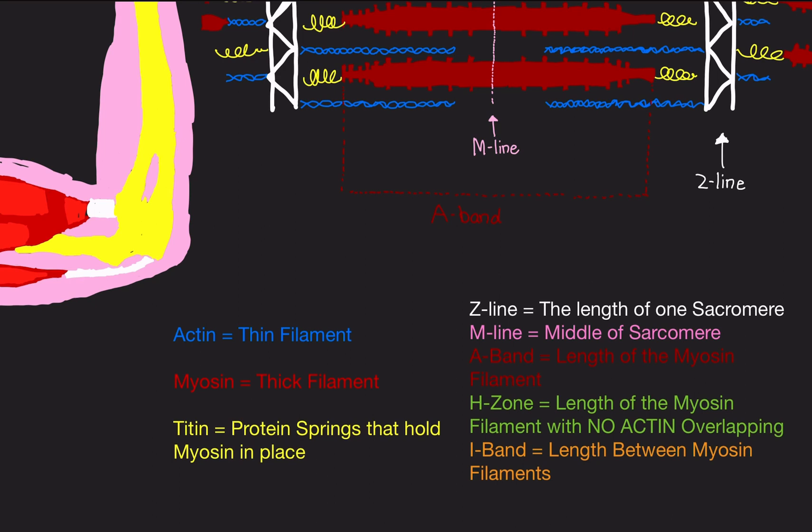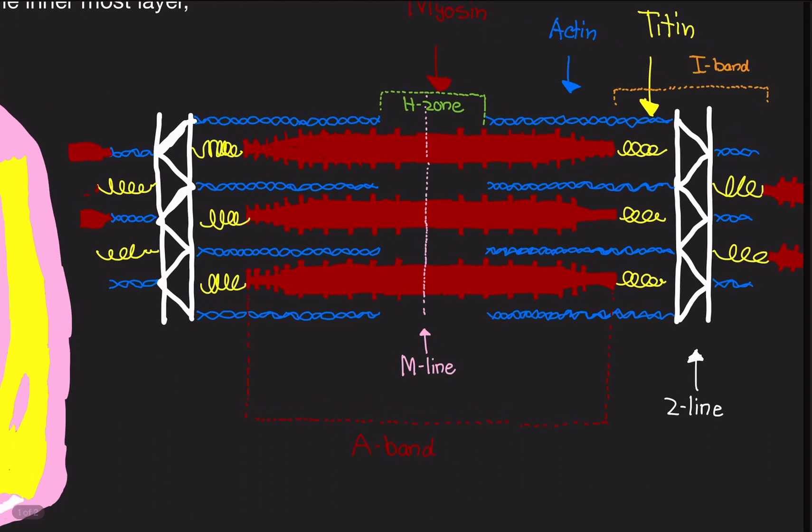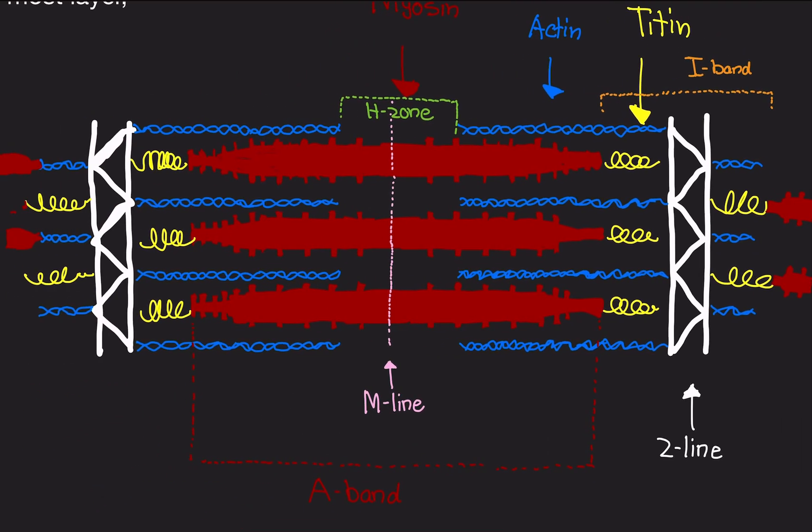Lastly, we have the I-band. The I-band is the length from one myosin filament to the next myosin filament in the adjacent sarcomere, so the next-door neighbor, essentially. So what's the distance between the end of one myosin to the start of another myosin in another sarcomere? That's what the I-band is.